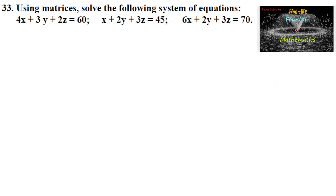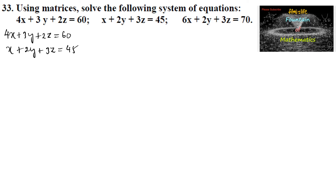Using matrices, solve the following system of equations: 4x plus 3y plus 2z is equal to 60, x plus 2y plus 3z is equal to 45, and 6x plus 2y plus 3z is equal to 70.